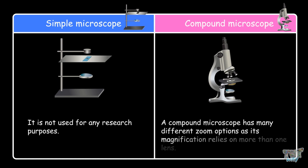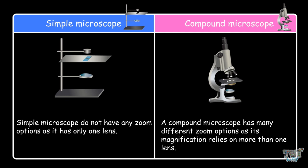A compound microscope has many different zoom options as its magnification relies on more than one lens, and this is why we call it the compound microscope. Whereas the simple microscope does not have any zoom options as it has only one lens, and this is why it's called the simple microscope.